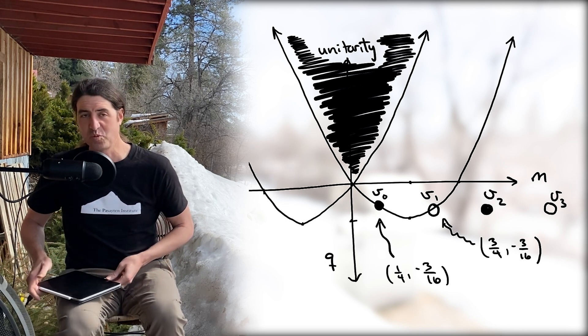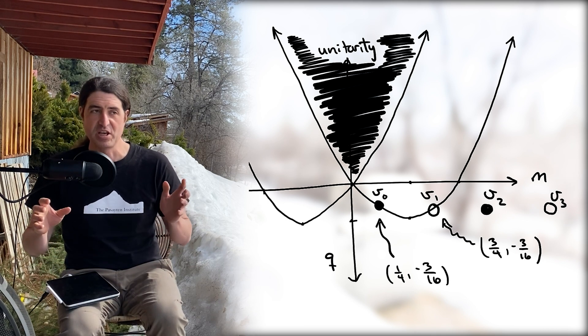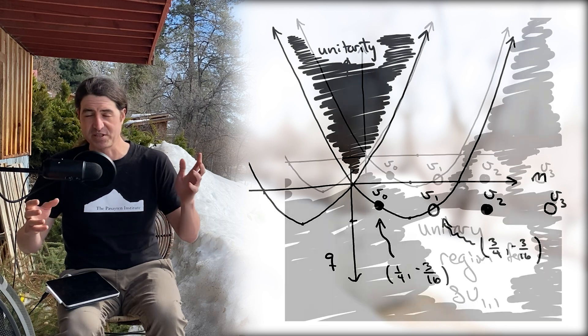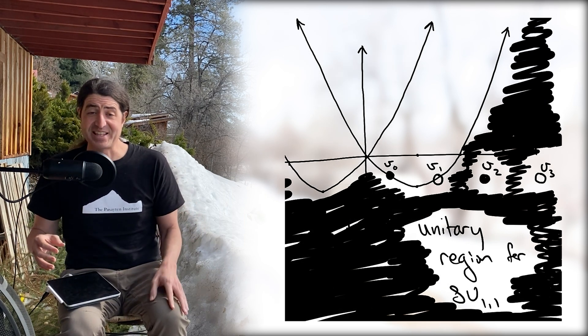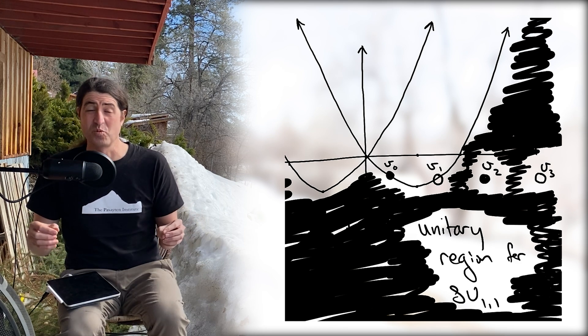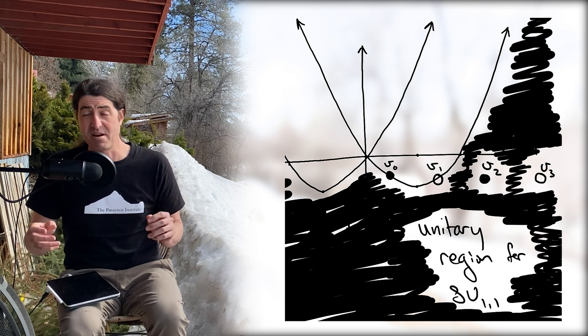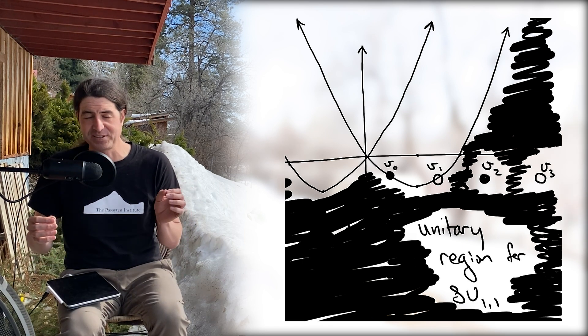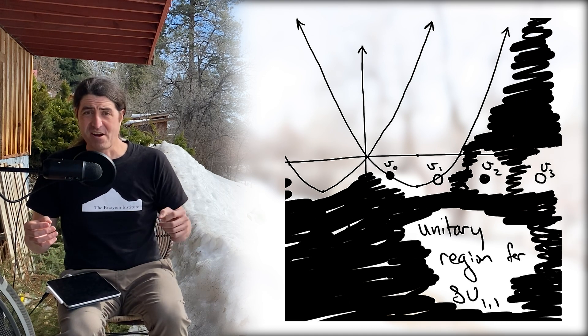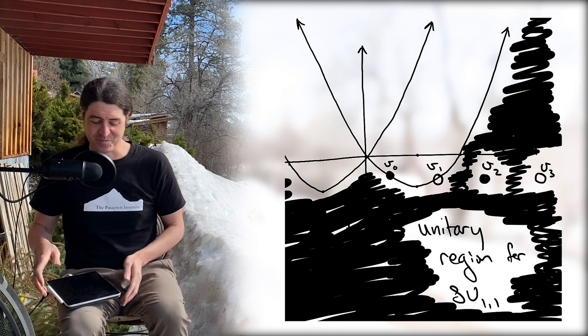One thing that we're going to learn about SU(1,1) is that owing to the way that the algebra works out, unitarity actually flips the allowed and disallowed regions. What's interesting here is that these two modules will actually be unitary modules in the case of SU(1,1), where the allowed and disallowed regions flip on the other sides of the parabola. They're particularly interesting given that non-convex, concave structure of the unitary regions.